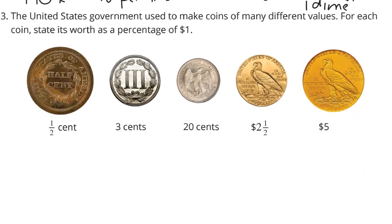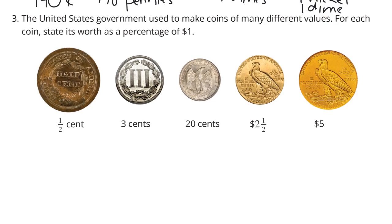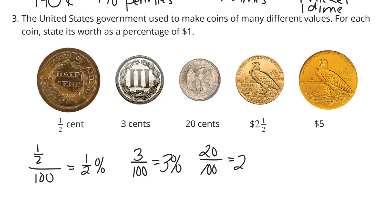All right. Question three. The United States government used to make coins of many different values. For each coin, state its worth as a percentage of $1. Well, let's start with the half cent. Now, the half cent would be one half over 100. Don't overthink that. If two over 100 is 2%, one half over 100 is simply one half percent. Three cents is three over 100, which is 3%. 20 cents is 20 over 100, which is 20%.